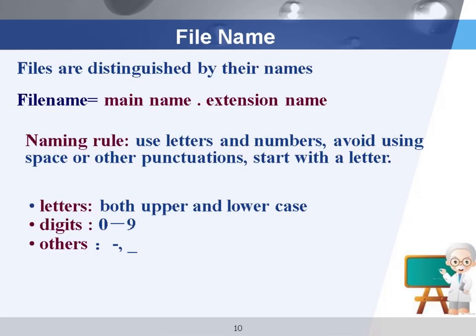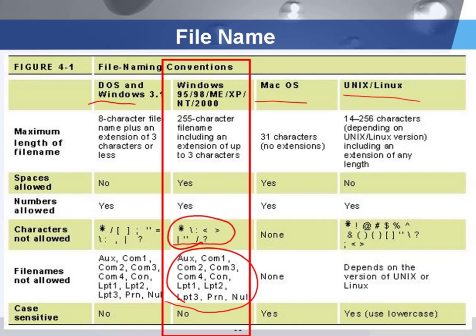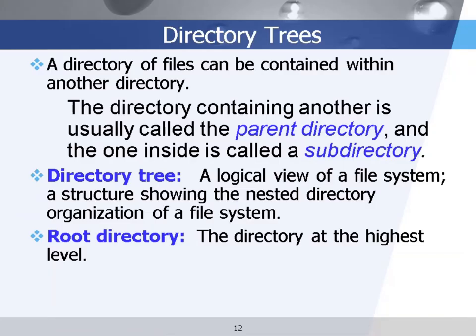Different operating systems may have different rules for naming a file, which we call naming conventions. Usually we can use letters, digits, or other characters in the file name. In Windows, certain characters are not allowed because they have special meaning, and certain file names are also not allowed because they represent special devices or ports. You have to follow the naming convention of your operating system. Because we can put files or directories under one directory, we can have a hierarchical structure called a directory tree.